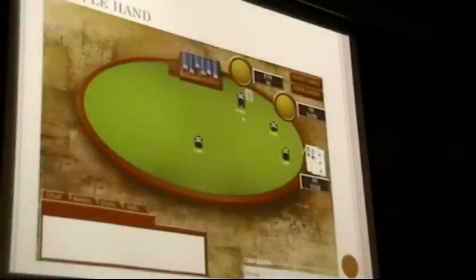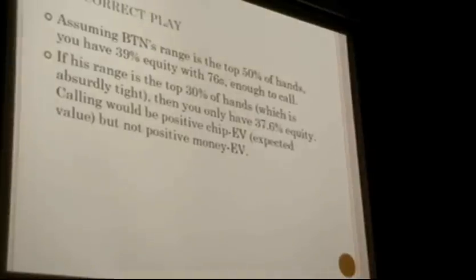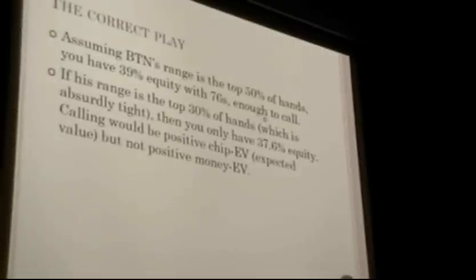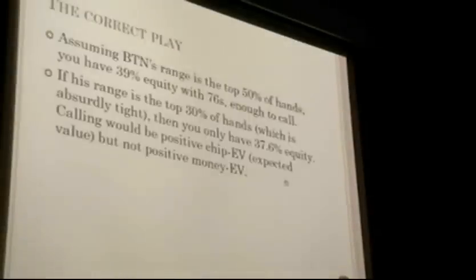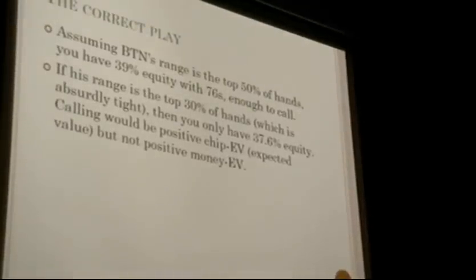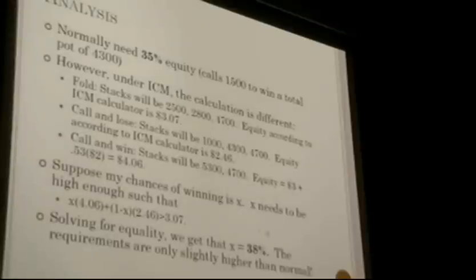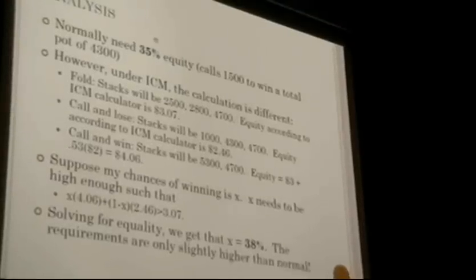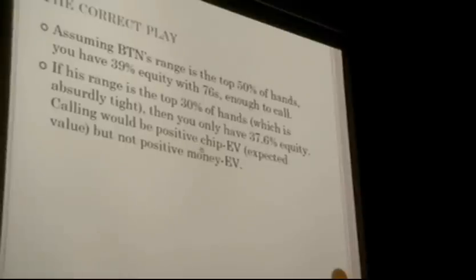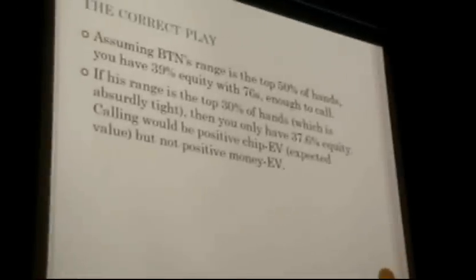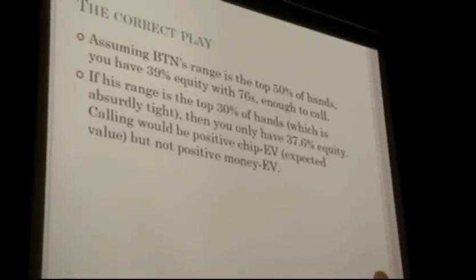If the button is going all in with 50% of hands, even with 7-6 suited — a hand that's only 7-high — you have 39% equity and it would be enough to call. With king-3 offsuit it would definitely be enough. Even if his range is only the top 30% of hands, which is absurdly tight, you still only have 37.6% equity. Remember: we needed 38% equity for a plus-money play, and 35% for a plus-chip play. So calling with 37.6% equity would be plus-chip but actually negative money expectation.